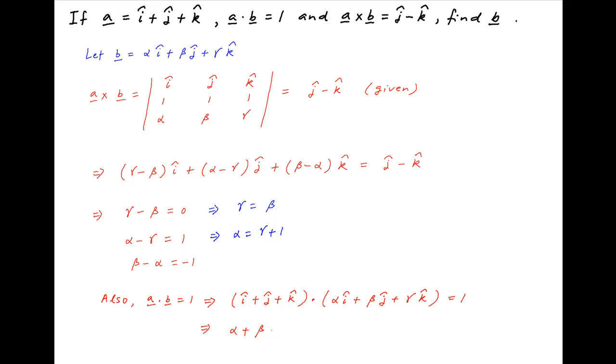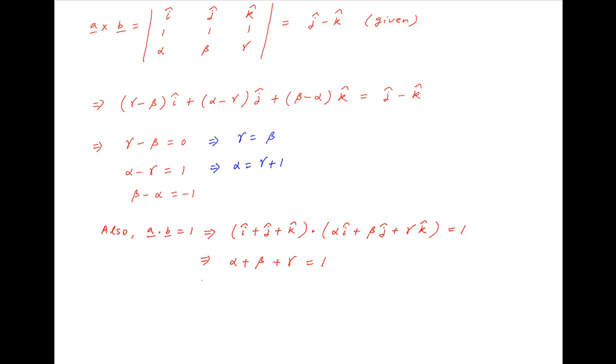This implies that alpha plus beta plus gamma is equal to 1. Now, substituting the values of alpha and beta obtained above, this becomes gamma plus 1 plus gamma plus gamma is equal to 1, which implies that 3 gamma is equal to 0 or gamma is equal to 0.